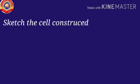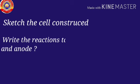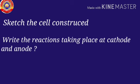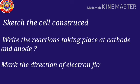Now the questions are: you are asked to sketch the cell constructed. Write the reactions taking place at cathode and anode. And you have to mark the direction of electron flow in the cell illustrated.